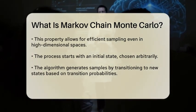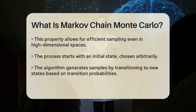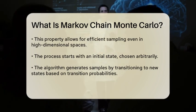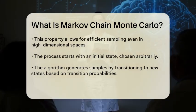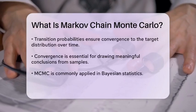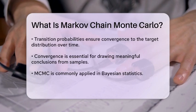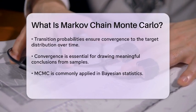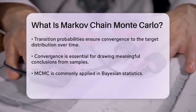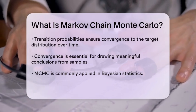The process begins with an initial state, which can be chosen arbitrarily. From this state, the algorithm generates a sequence of samples by moving to new states based on a set of transition probabilities. These probabilities are designed to ensure that, over time, the distribution of the states converges to the desired target distribution. This convergence is key, as it allows researchers to draw meaningful conclusions from the samples generated.